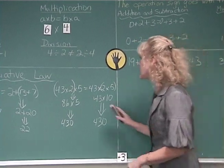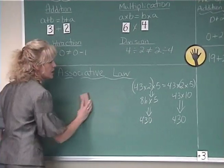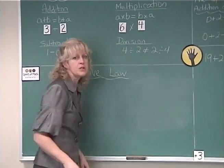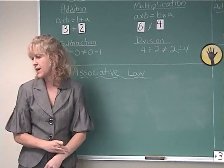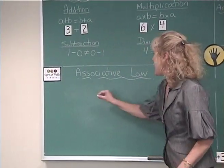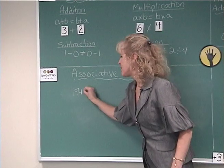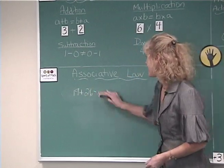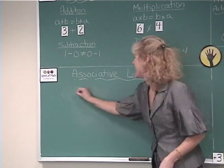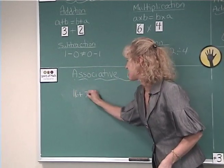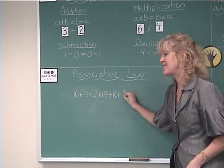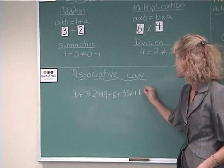Now let's have a look at something that even primary school kids do. This is regrouping, where you group numbers together to form multiples of 10. An example. Let's take 16 plus 7 plus 2 plus 19 plus 8 plus 33 plus 1 plus 14.